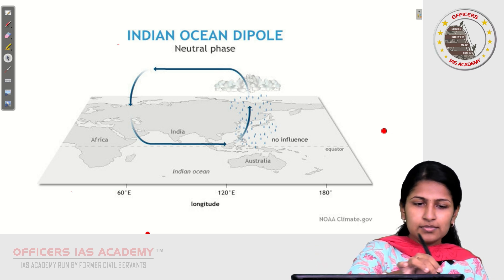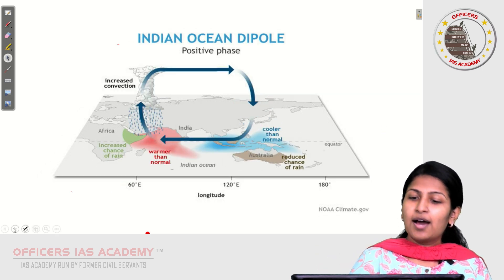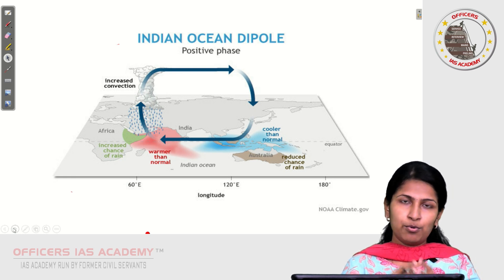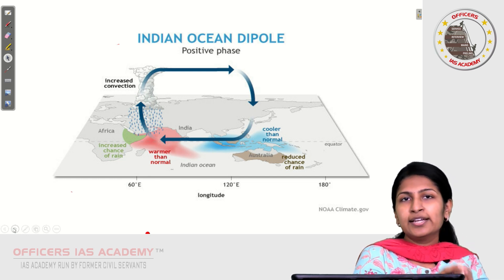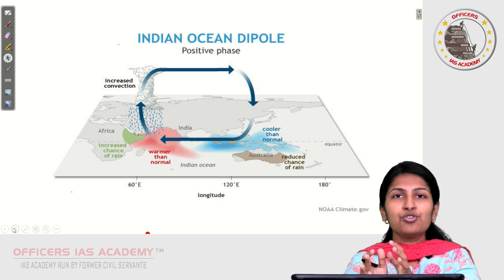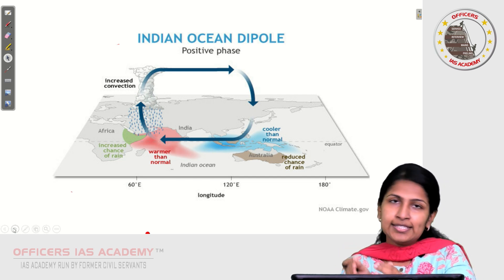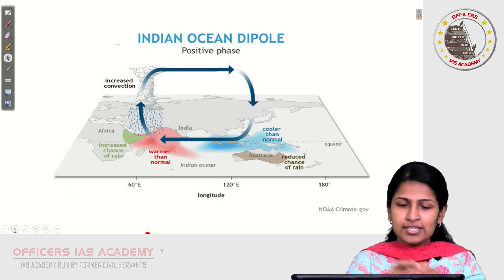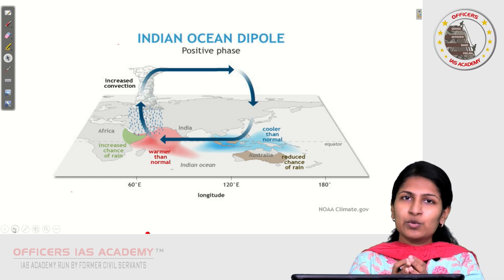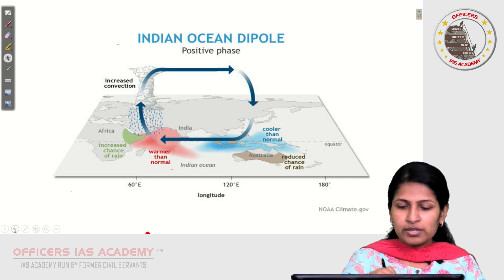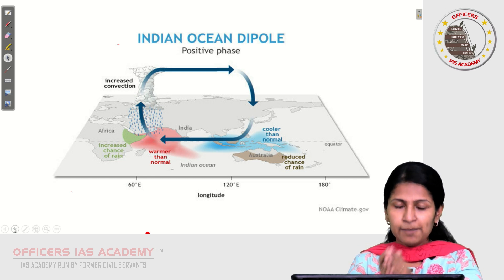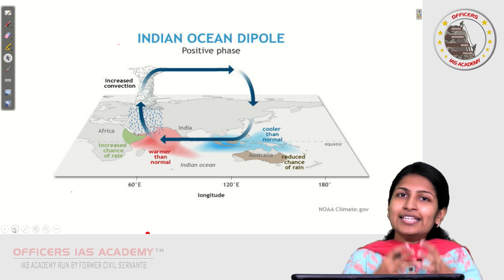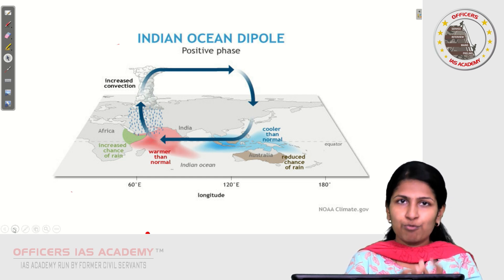The next phase is what we call the positive phase. The positive Indian Ocean Dipole is where there is an anomaly — there is accumulation of warm water along the Western Indian Ocean and accumulation of cold water along the Eastern Indian Ocean. Because of this, there is more moisture supply along the Western Indian Ocean. Therefore, regions like the Eastern Coast of Africa and India especially get benefit from this positive IOD, with enhanced rainfall due to the increased moisture supply from the accumulation of warm water.